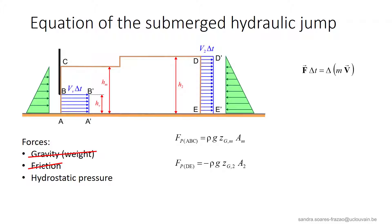So the pressure force on ABC is written like this, with ZGM being the depth of the center of gravity of the section AM.